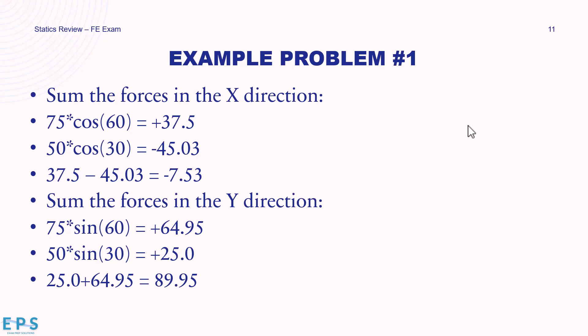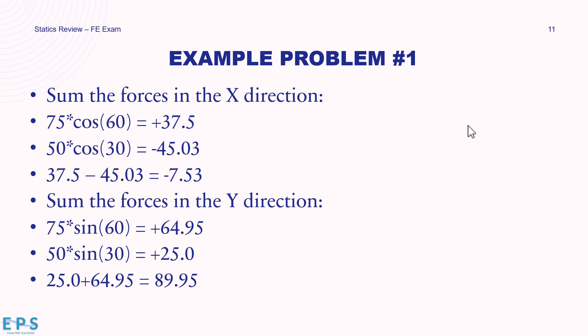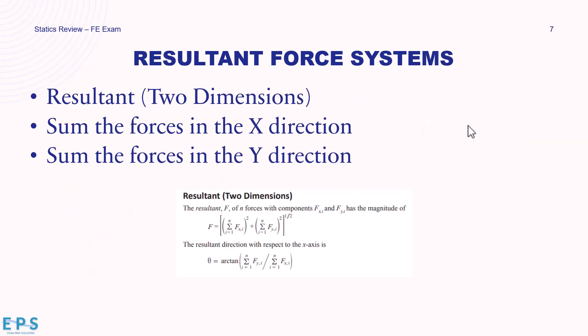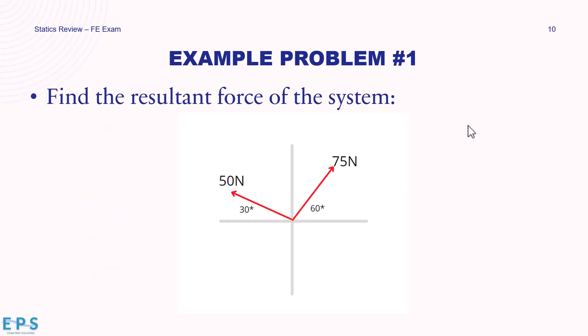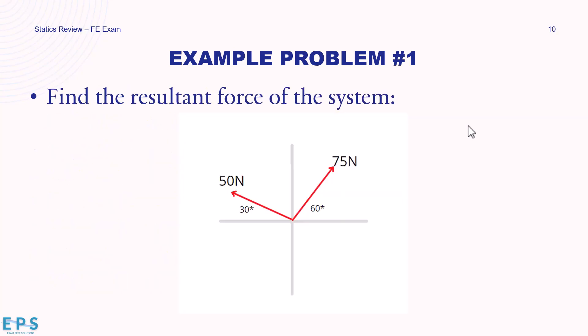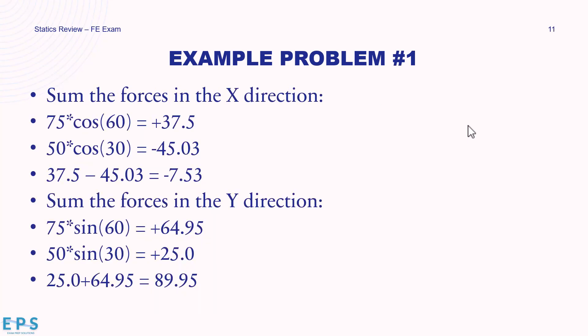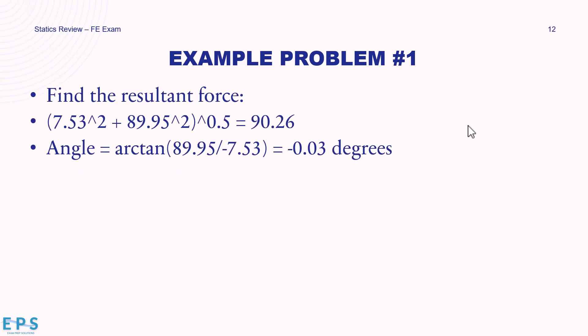For the y direction we use sine to find the y components of each force, then sum them. We then find the resultant force using the earlier equation: square the summed x and y forces, add them, and take the square root — squaring always makes negatives positive. The resultant force is 90.26 newtons. Taking the arc tangent gives the direction as approximately −0.03 degrees. That's how to find the resultant force and its direction.